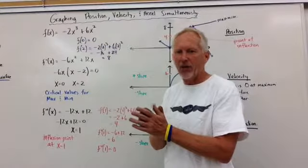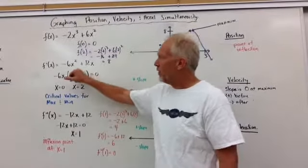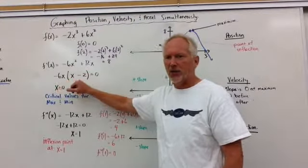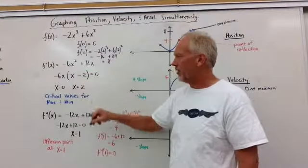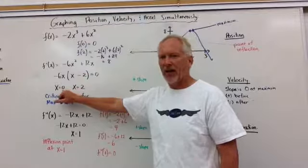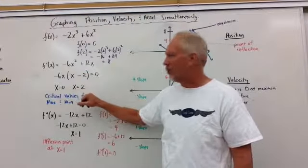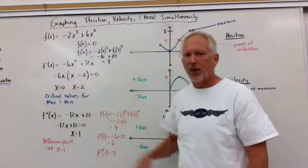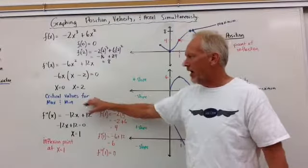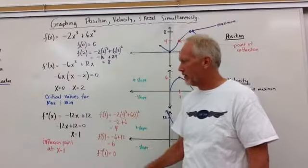So once we factor out a negative 6x, we get x minus 2 equals 0. And we will see that at x equal 2 and at x equal 0, these are our critical values. And we will have maxes and minimums at those places.